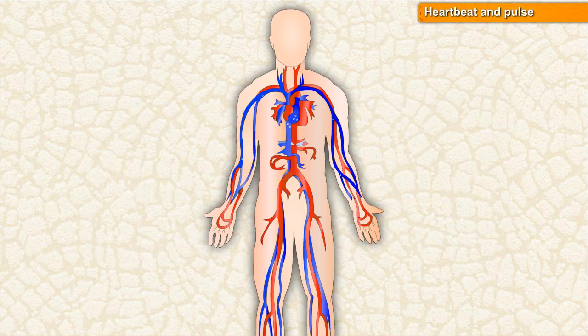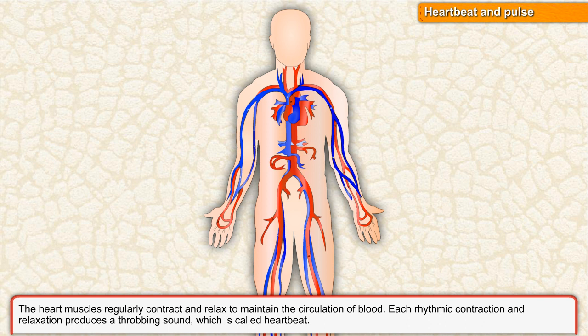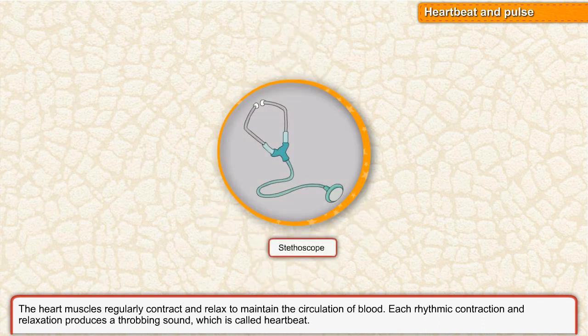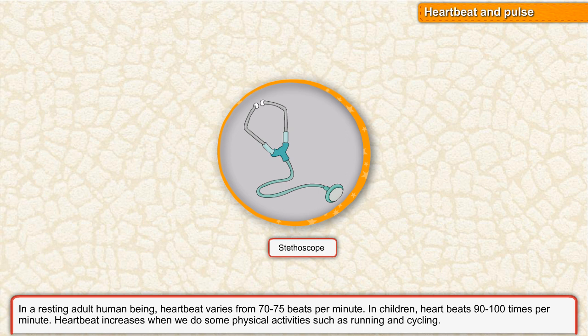Heartbeat and Pulse. The heart muscles regularly contract and relax to maintain the circulation of blood. Each rhythmic contraction and relaxation produces a throbbing sound, which is called a heartbeat. In a resting adult human being, heartbeat varies from 70 to 75 beats per minute.